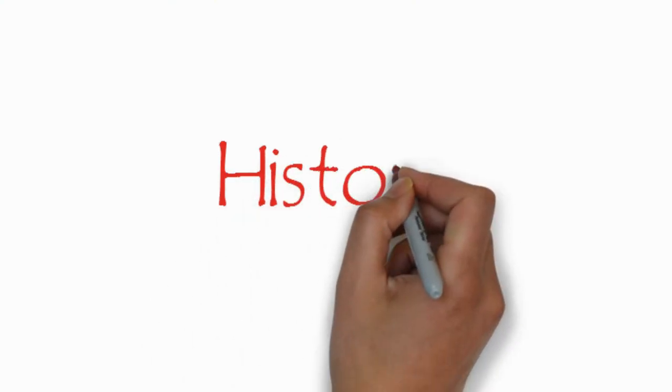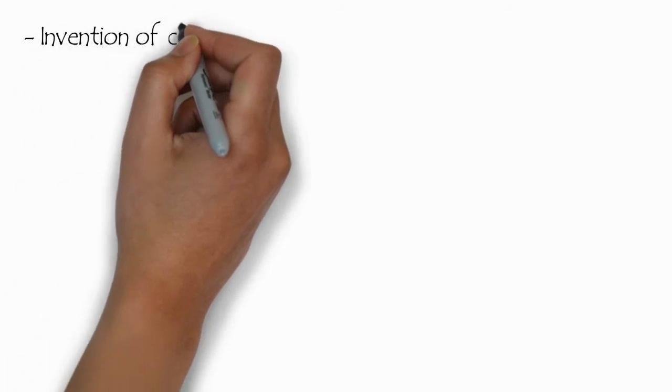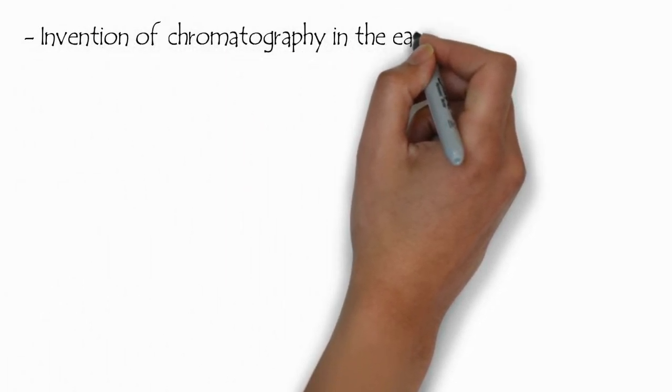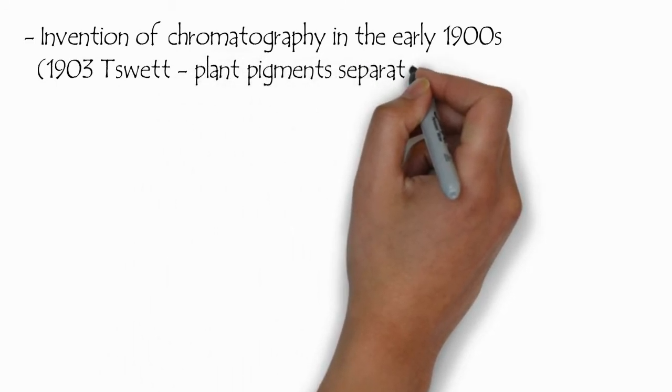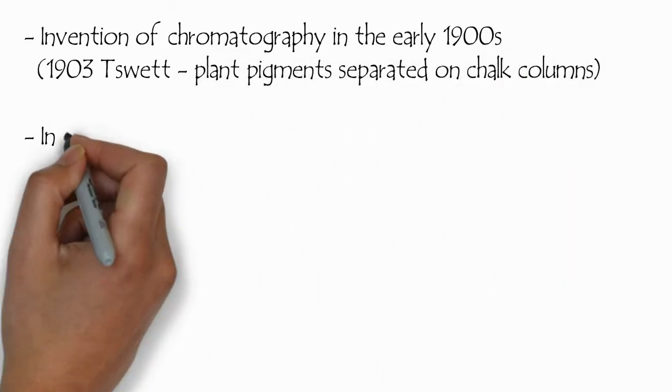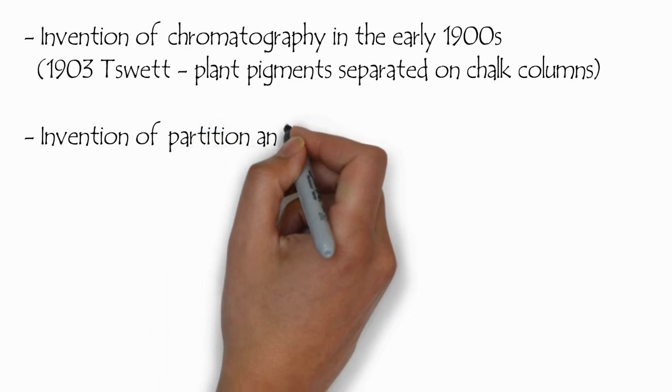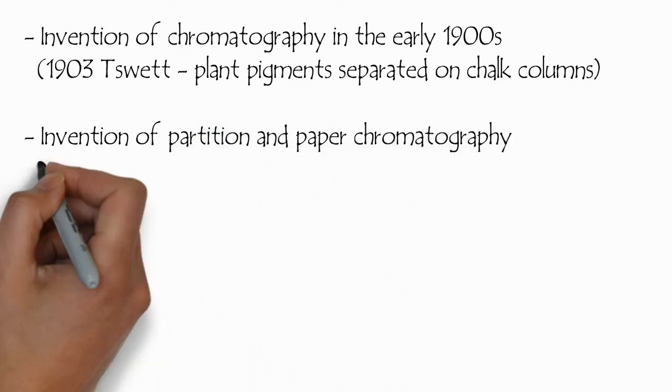Chroma means color. Originally, if we go to the history, invention of chromatography started by Tswett in 1903 by separating plant pigments on a chalk column.